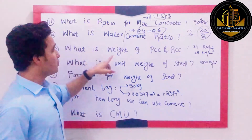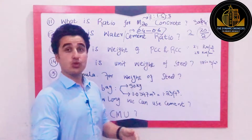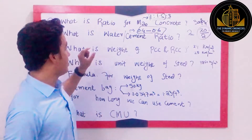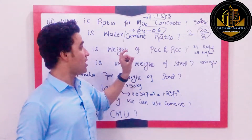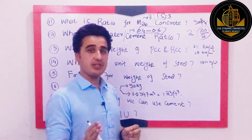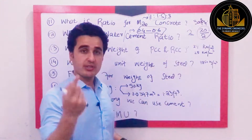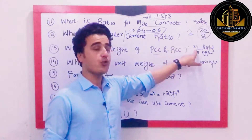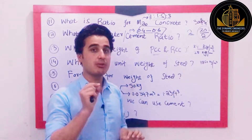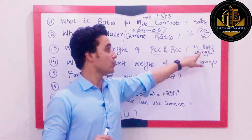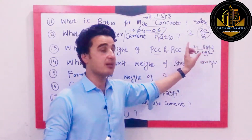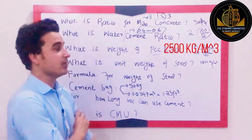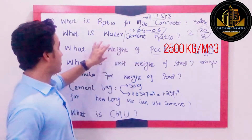Question number 13: What is the weight of PCC and RCC? RCC and PCC differ in weight because RCC contains steel while PCC does not. The weight of PCC is 2400 kilogram per cubic meter, and the weight of RCC is 2500 kilogram per cubic meter.